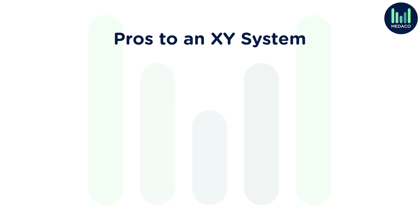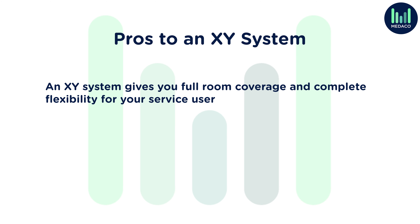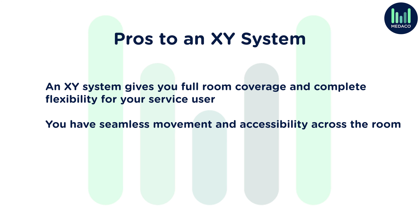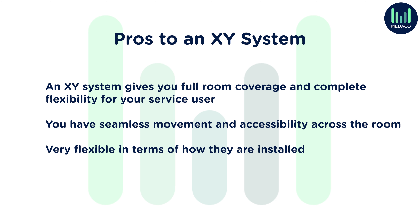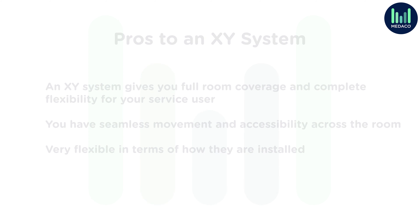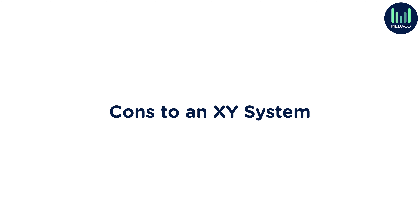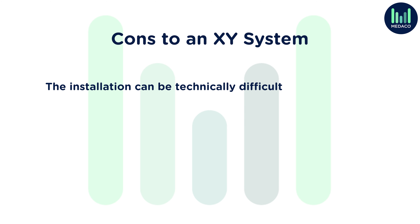An XY system, also known as an H-frame system, moves across an X and Y axis, allowing the service user to benefit from the full range of movement across the room. With an XY system you will need a minimum of four fixing points and it will typically take a full day for installation. An XY system gives you full room coverage and complete flexibility for your service user, with seamless movement and accessibility across the room. Should one of your service users fall, you have the capacity to hoist them up at any point in the room.